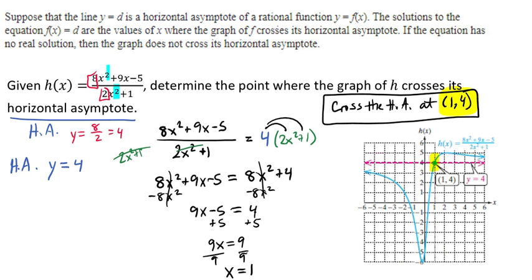And so that's how you determine the point where the graph of your function crosses its horizontal asymptote.